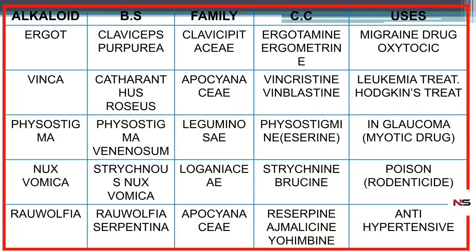We are going to study each drug in detail: their biological source, family, chemical constituents, and uses. The first one is ergot. Ergot's biological source is Claviceps purpurea of family Clavicipitaceae. The main constituents are ergotamine and ergometrine. Ergotamine is mainly used for migraine.